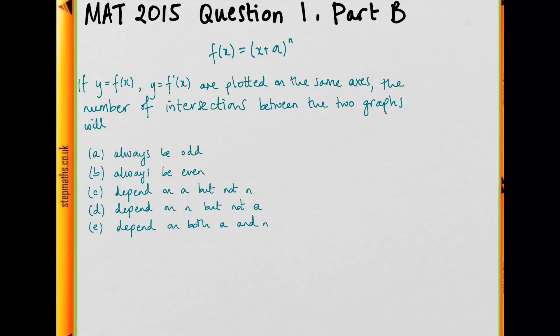And then it says if f of x and this derivative are both plotted on the same axis, then the number of intersections between the two graphs satisfy which of these conditions.